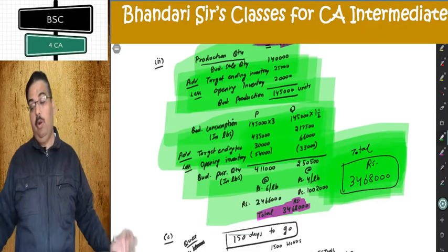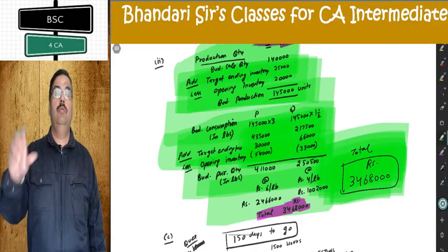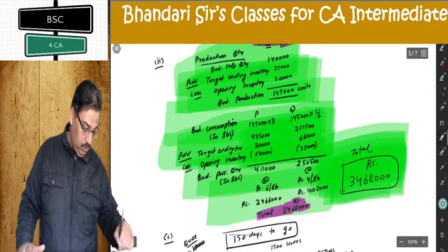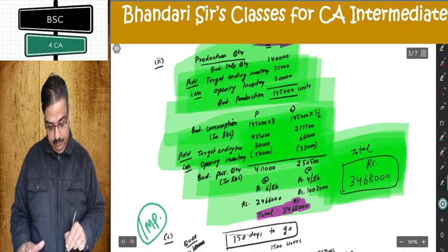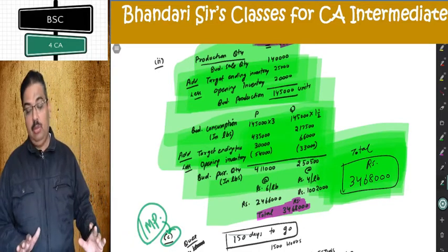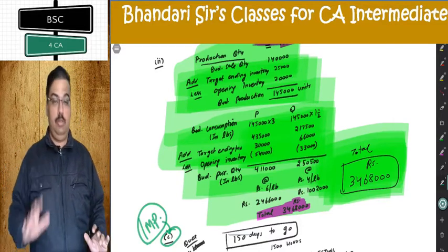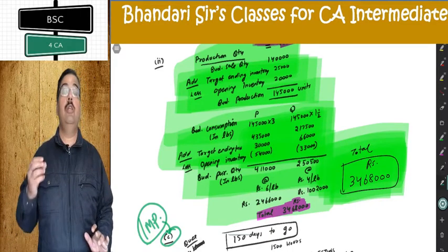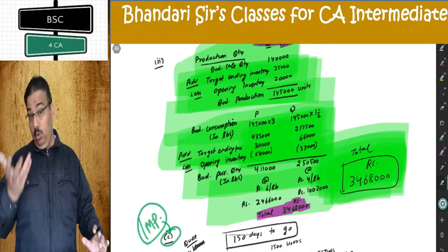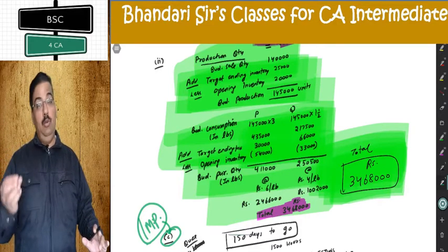Now comes the important part — something new in this question not there in any earlier question. Unique point — you can mark it as an important part: capacity utilization. I can give a formula for everything, but try to conceptualize. Try to understand what capacity utilization means.